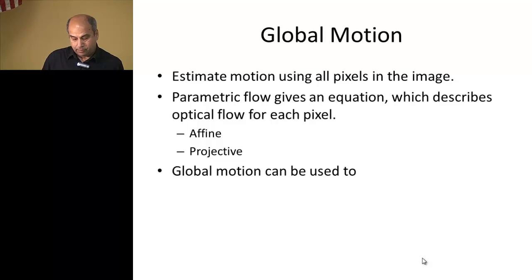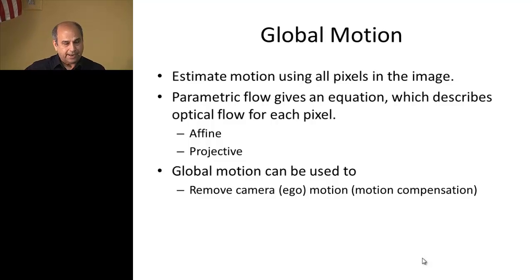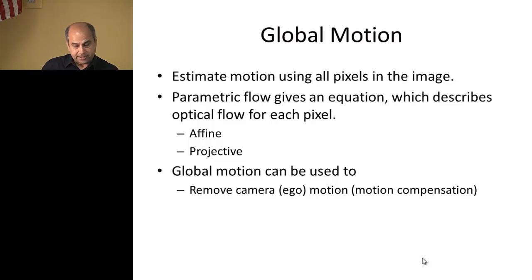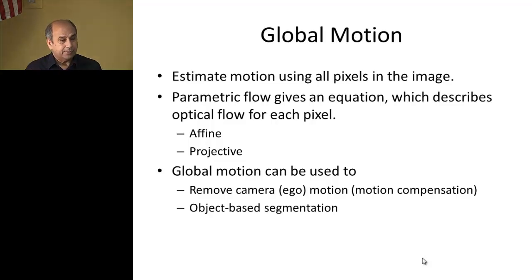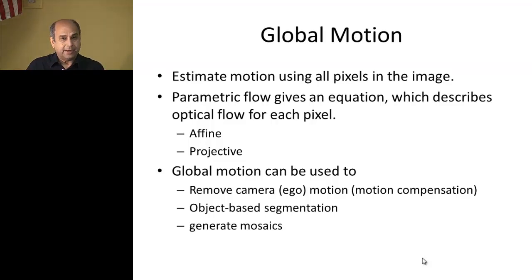We will discuss projective or homography flow. Once we have global motion, it can be used for many tasks. One is removing camera motion or ego motion — 'ego' meaning self. When both the camera and objects are moving, analysis becomes confusing. If we remove the camera motion, we can focus on object motion — this is called motion compensation. We can also do segmentation of moving objects, because removing camera motion lets us isolate object motion. We can also stitch images together to make a mosaic.